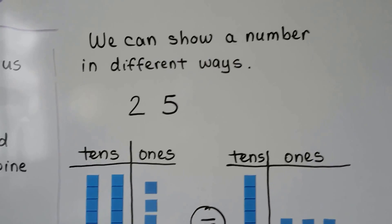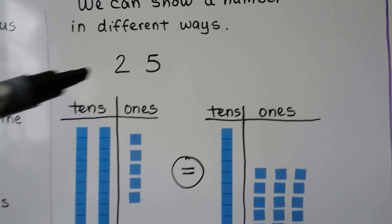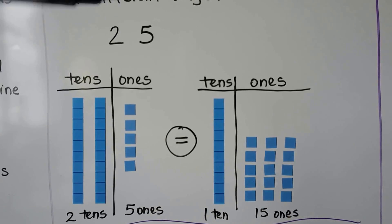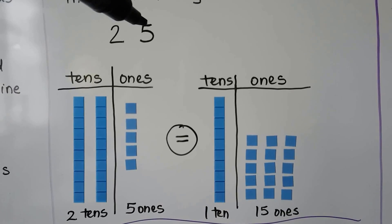We can show a number in different ways. 25. That's going to be two tens, see, and five ones.